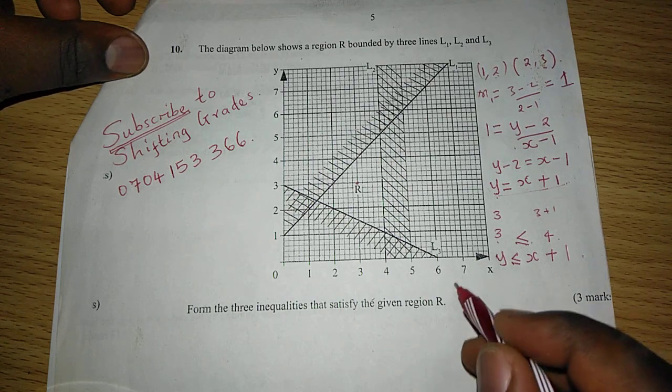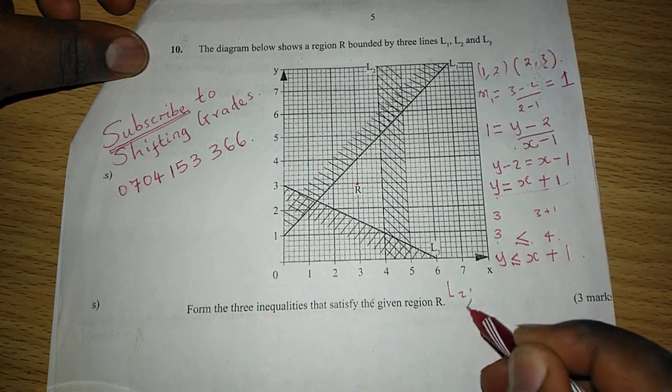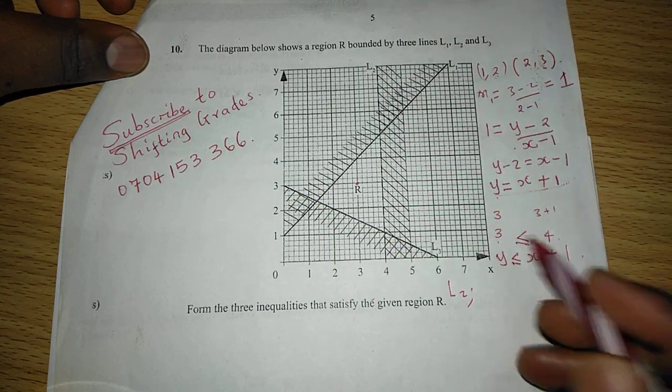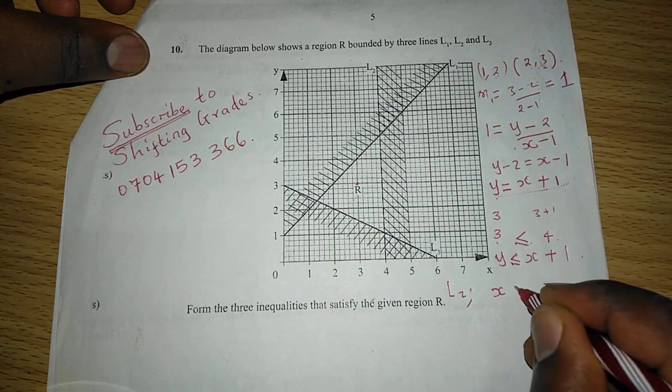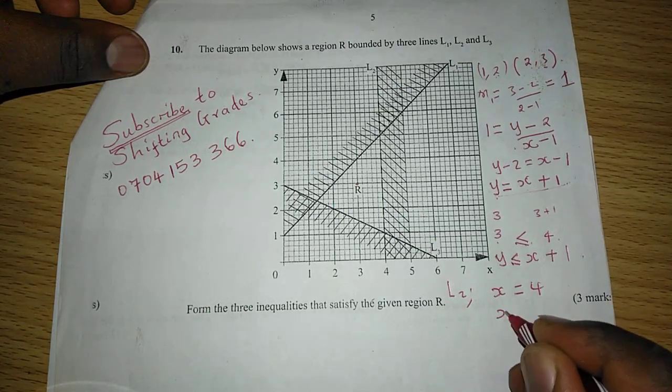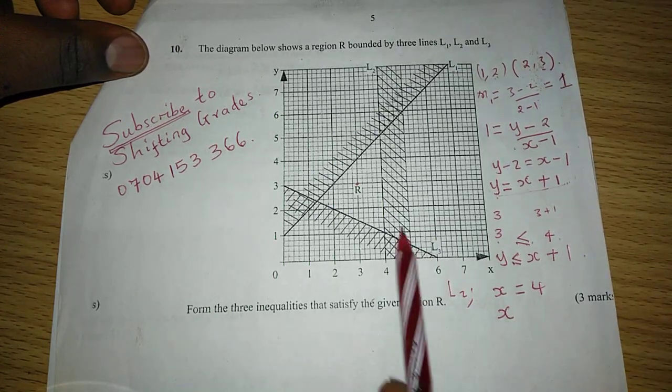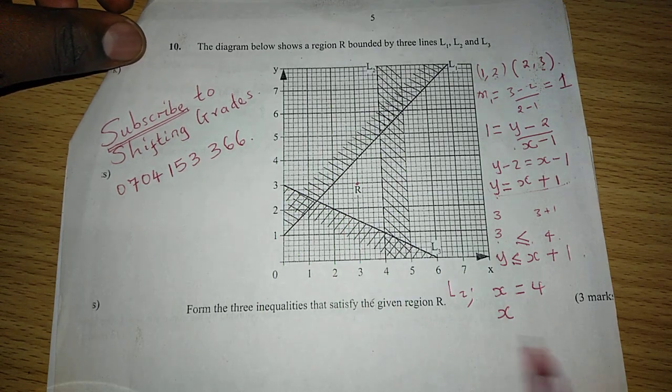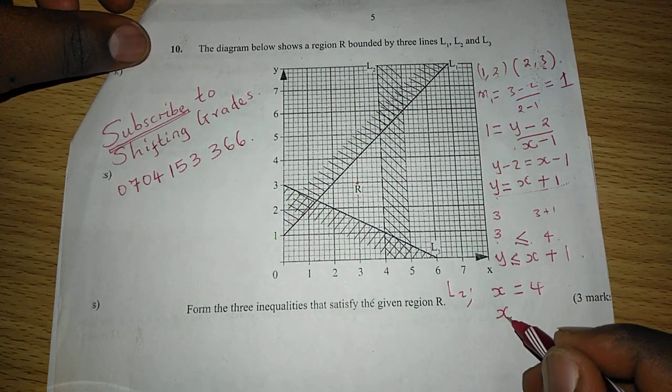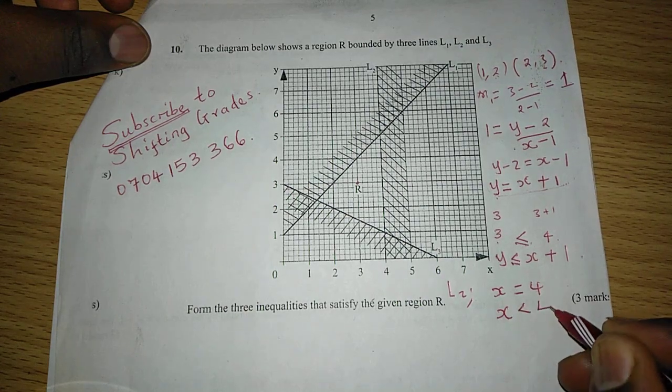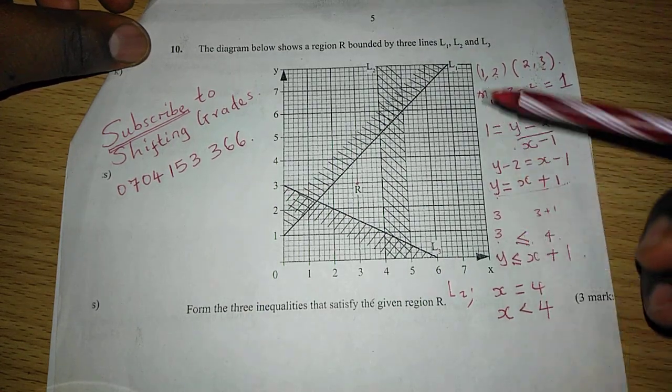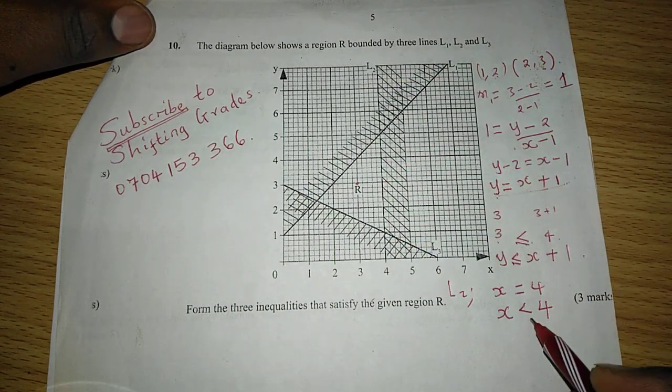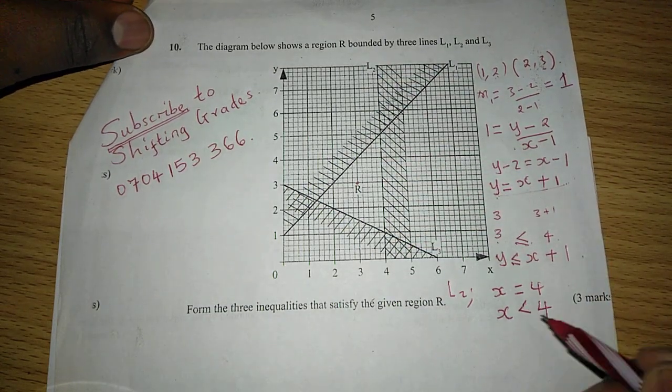The second inequality, L2. L2 is passing through point X equals to 4. So the inequality will be, because the required side is the one whose values of X are less than 4, then it is X less than 4. Since the line is incomplete or dotted, then we use simply less than.